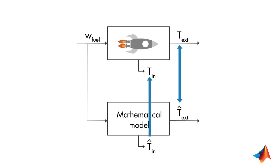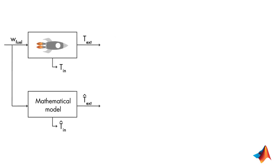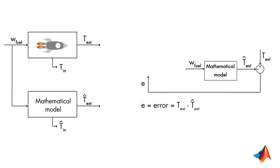What we're trying to do is minimize the difference between the estimated and measured external temperature. Does this sound familiar to you? Actually, we're talking about a feedback control system where we try to control the error between the measured and estimated external temperature at zero using a controller K.